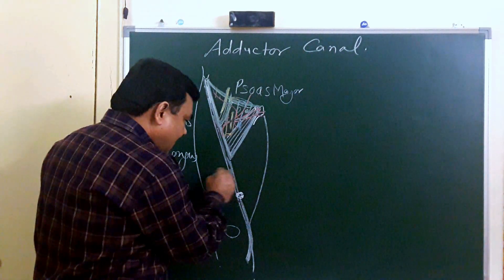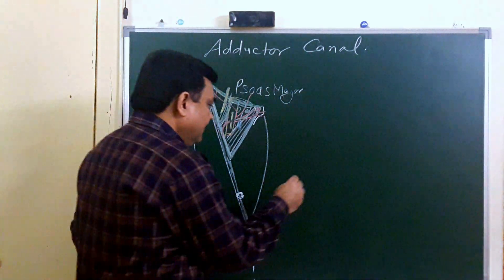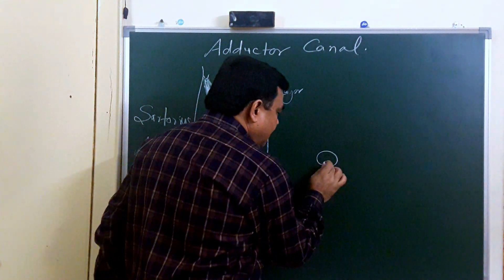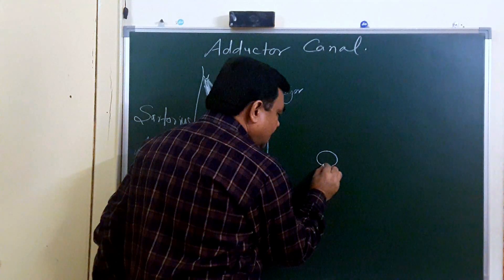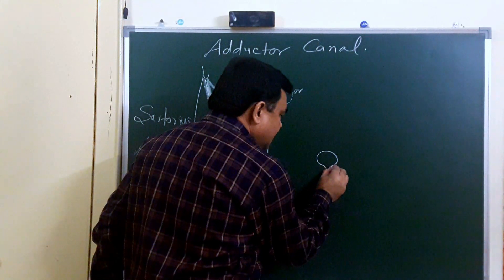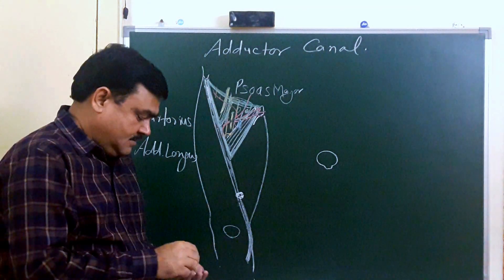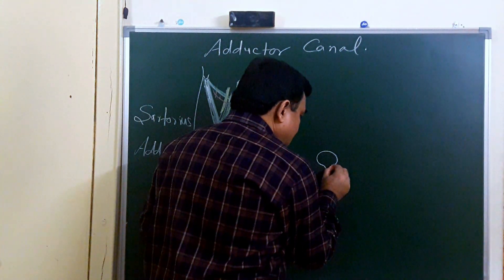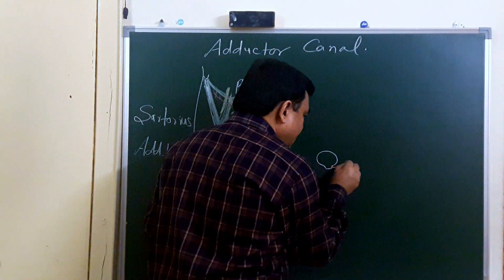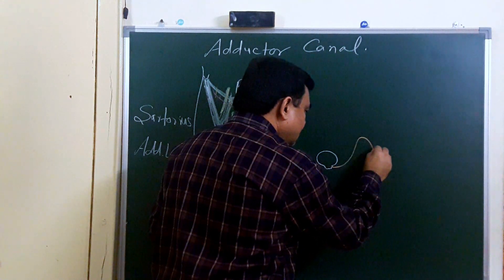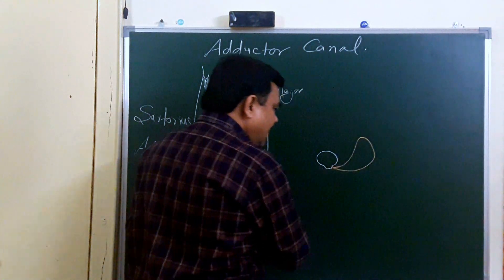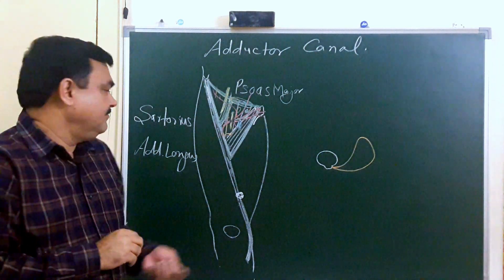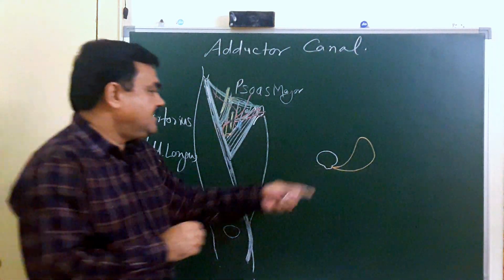If you cut a section at this level, you will find here is the femur, here is the linea aspera, and here is the medial lip of the linea aspera. From here there is one muscle attached — this is vastus medialis.